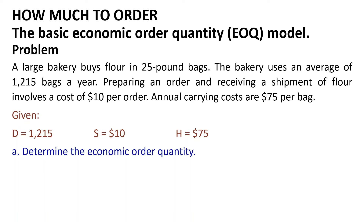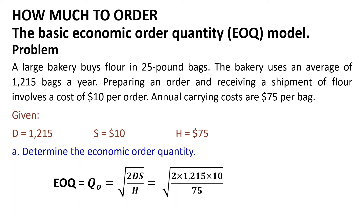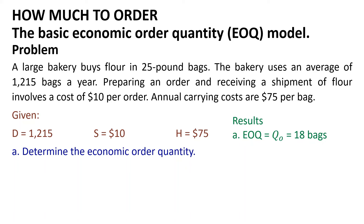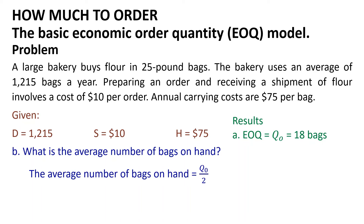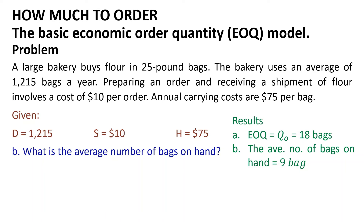The first question is to determine the economic order quantity. Recalling the equation Q₀ = √(2DS/H), substitute the given values: Q₀ = √(2 × 1,215 × 10 / 75) = 18 bags. So the economic order quantity equals 18 bags. The second question asks for the average number of bags on hand, which equals Q₀ / 2 = 18 / 2 = 9 bags.